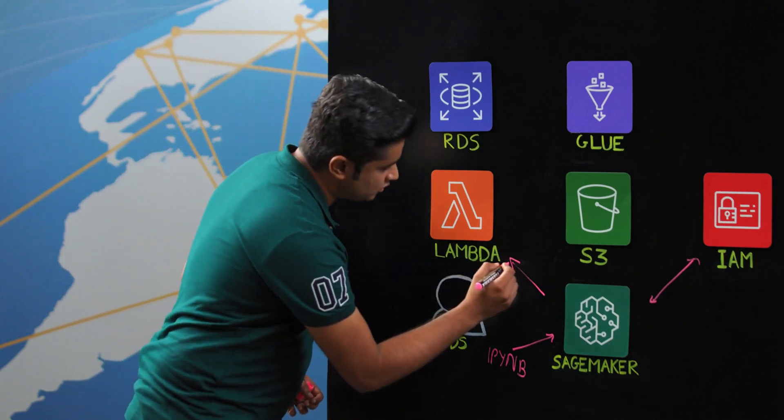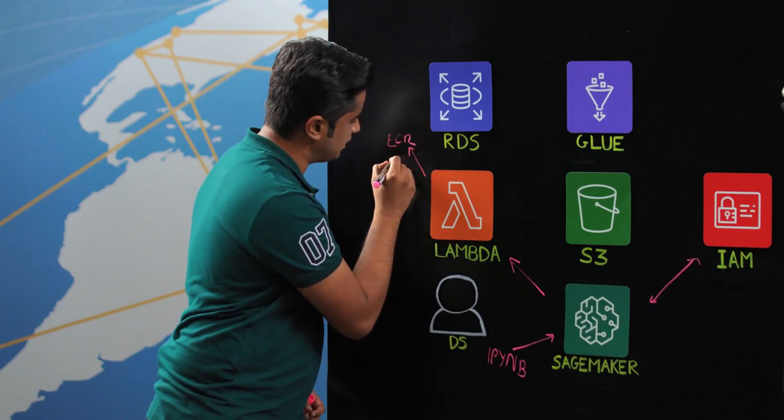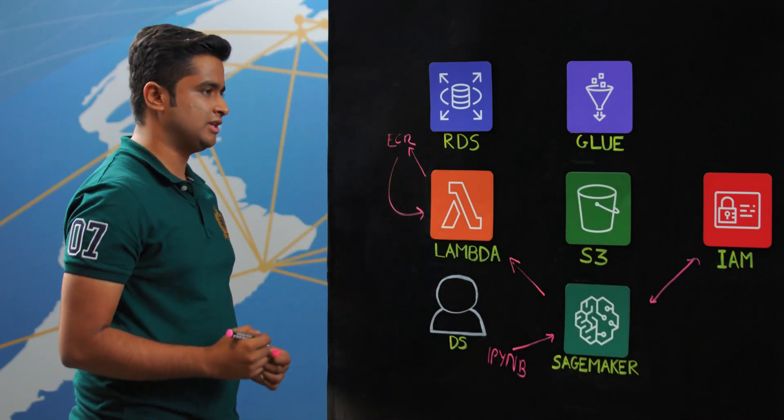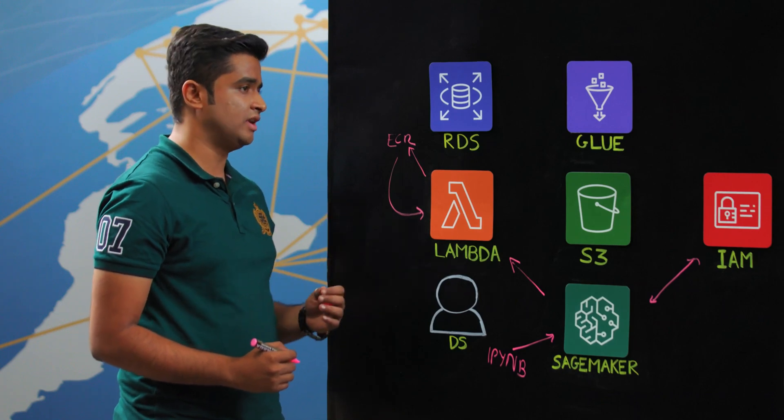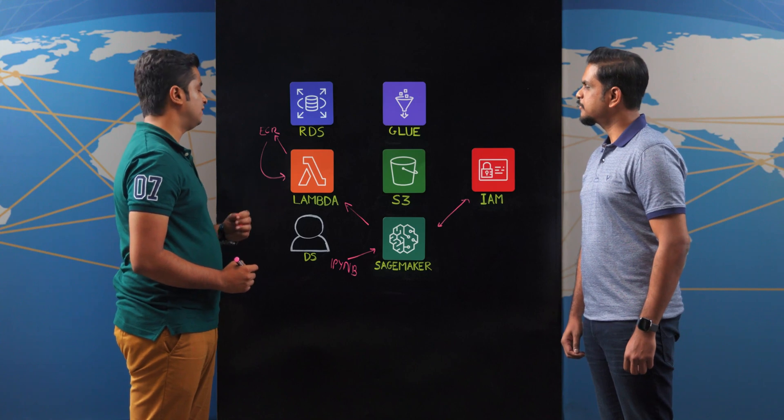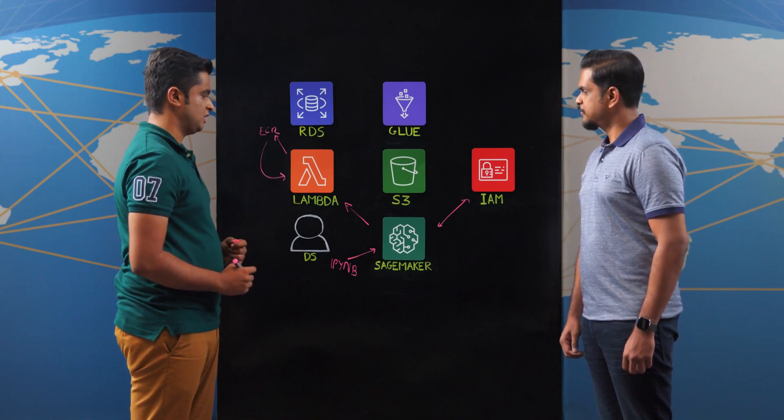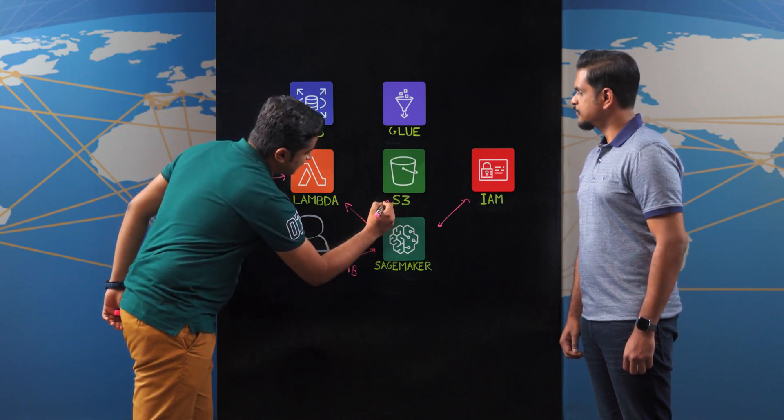Once the request goes for a processing job, the request comes to a Lambda, which in turn calls the ECR where we have our containers. From the ECR repository, we fetch a custom container that contains all the pre-installed libraries necessary for the notebook to complete execution. We also use PaperMill that allows us to inject parameters into the notebooks on a dynamic basis. The output of these processing jobs is directly dumped into a data lake in S3.